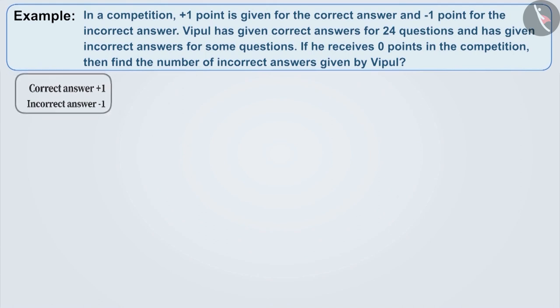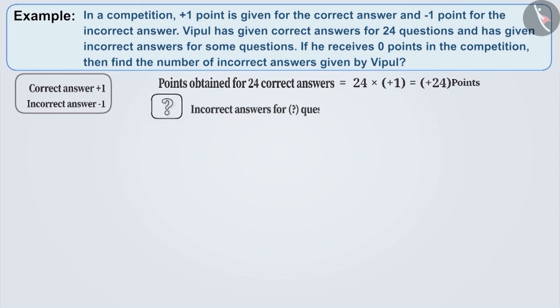Since Vipul has given 24 correct answers, therefore Vipul will get 24 into plus 1 is equal to plus 24 points. We need to find the number of incorrect answers given by him due to which his total points are 0.